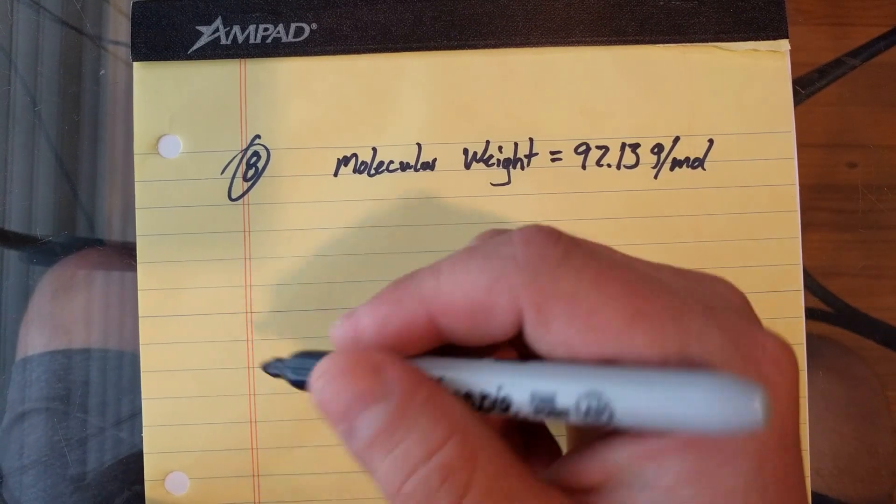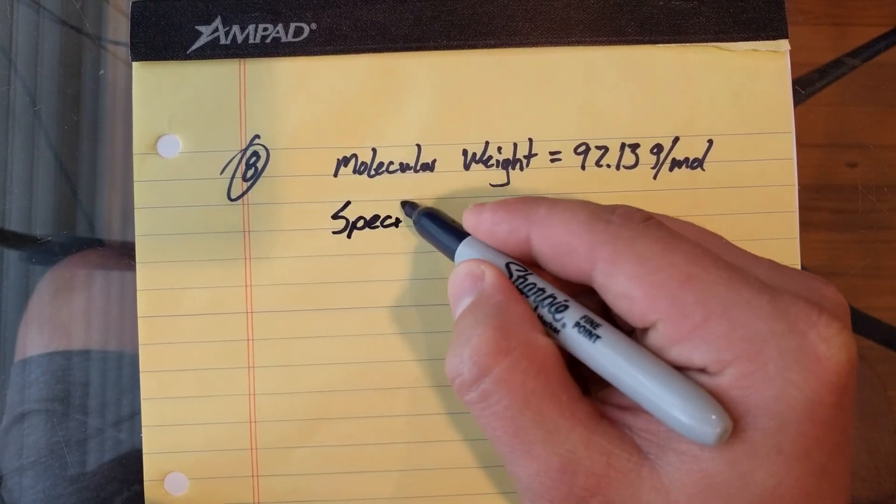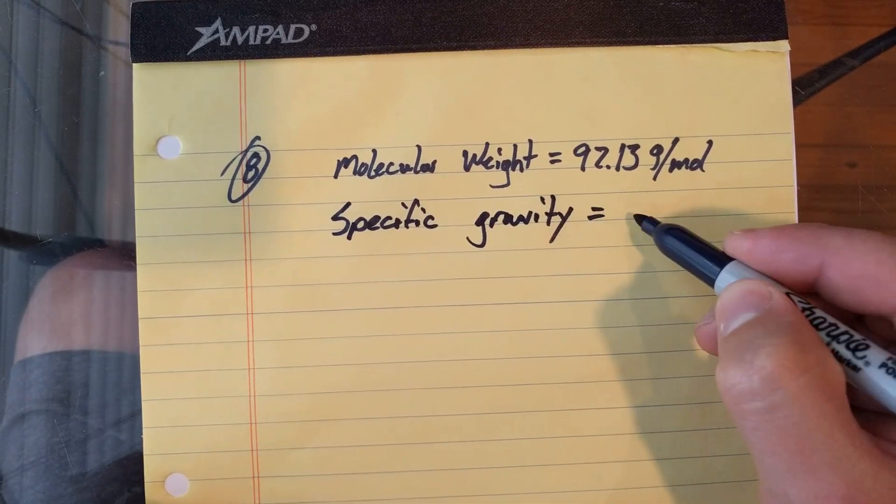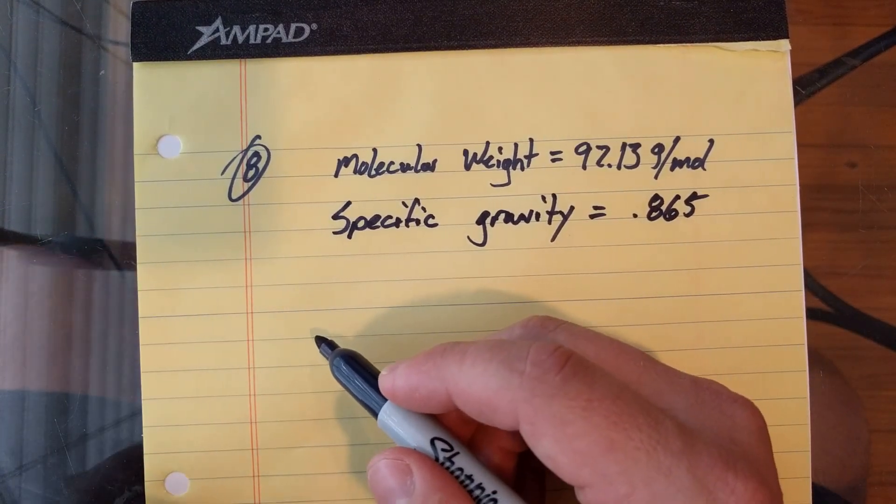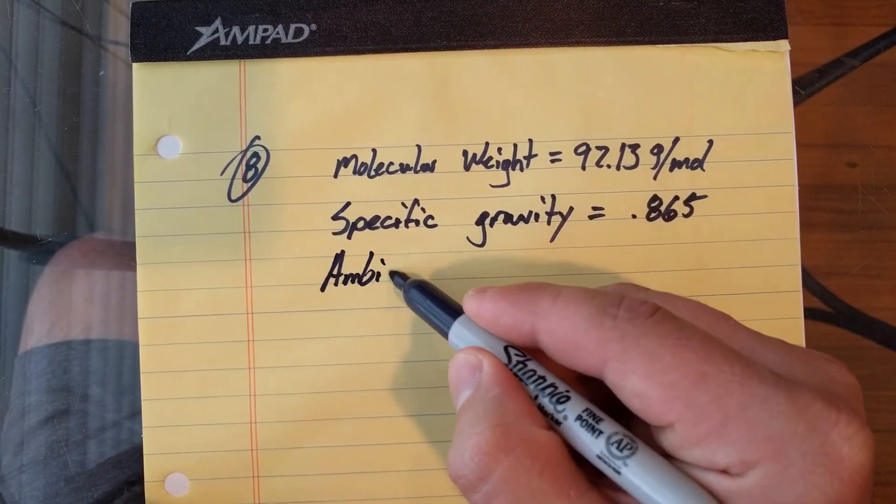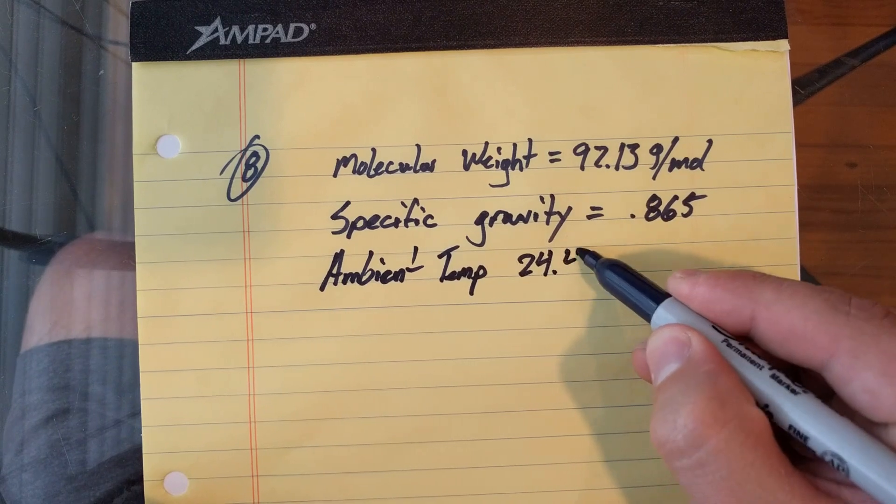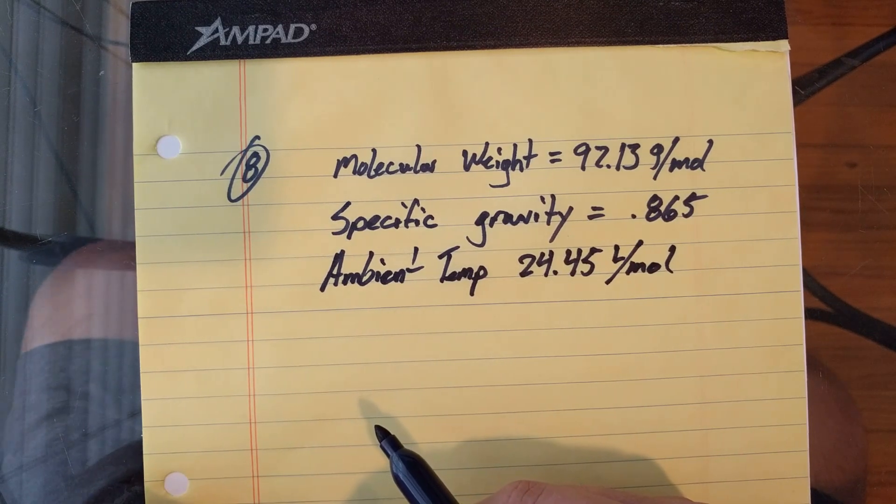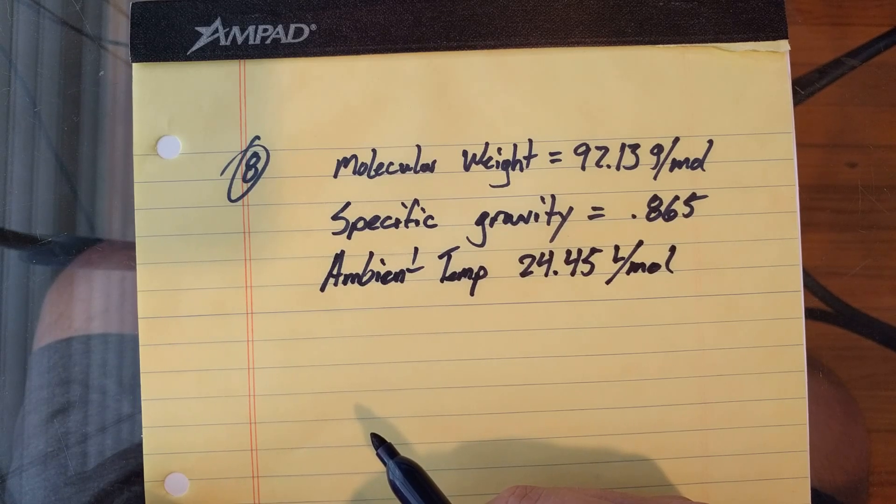So we have the molecular weight, we have the specific gravity, 0.865. We know that at ambient temperature we have 24.45 liters per mole. That's going to become important as well.